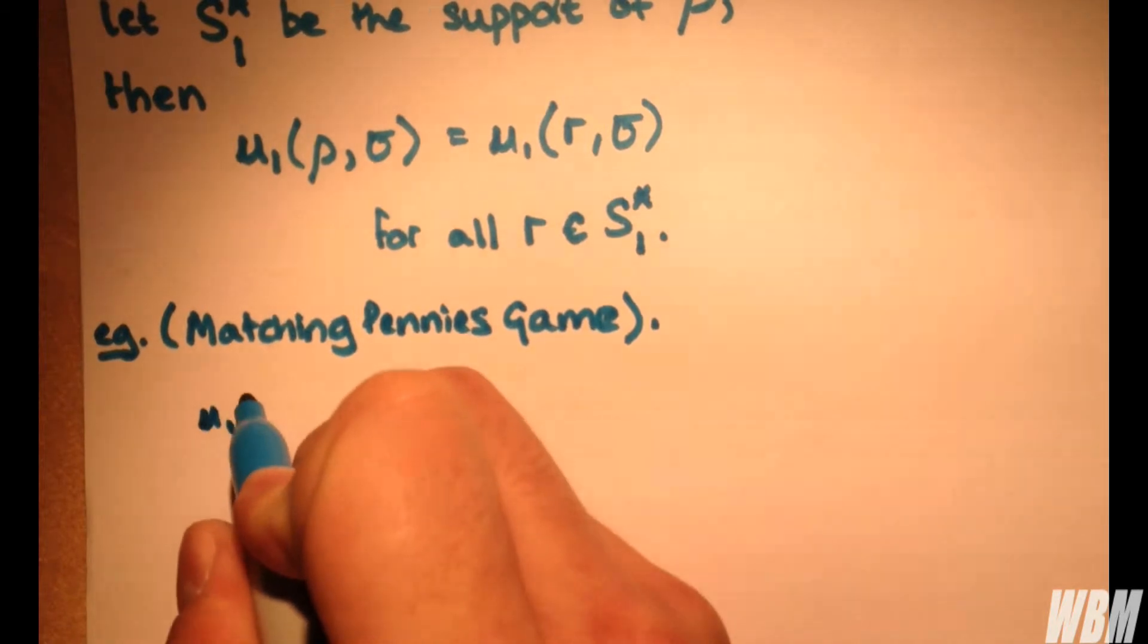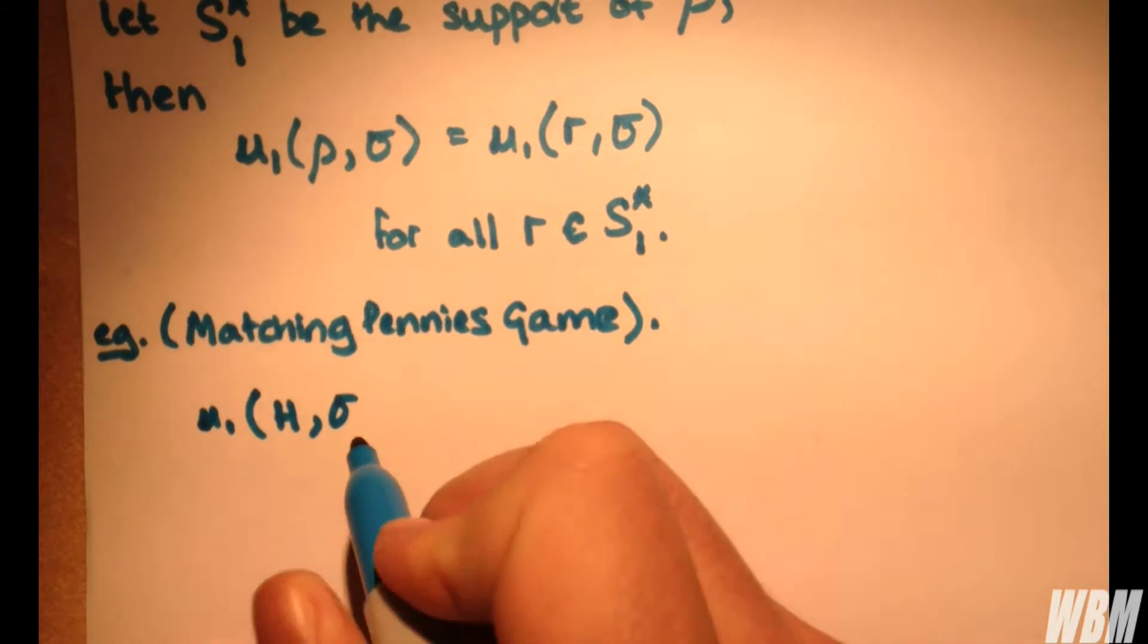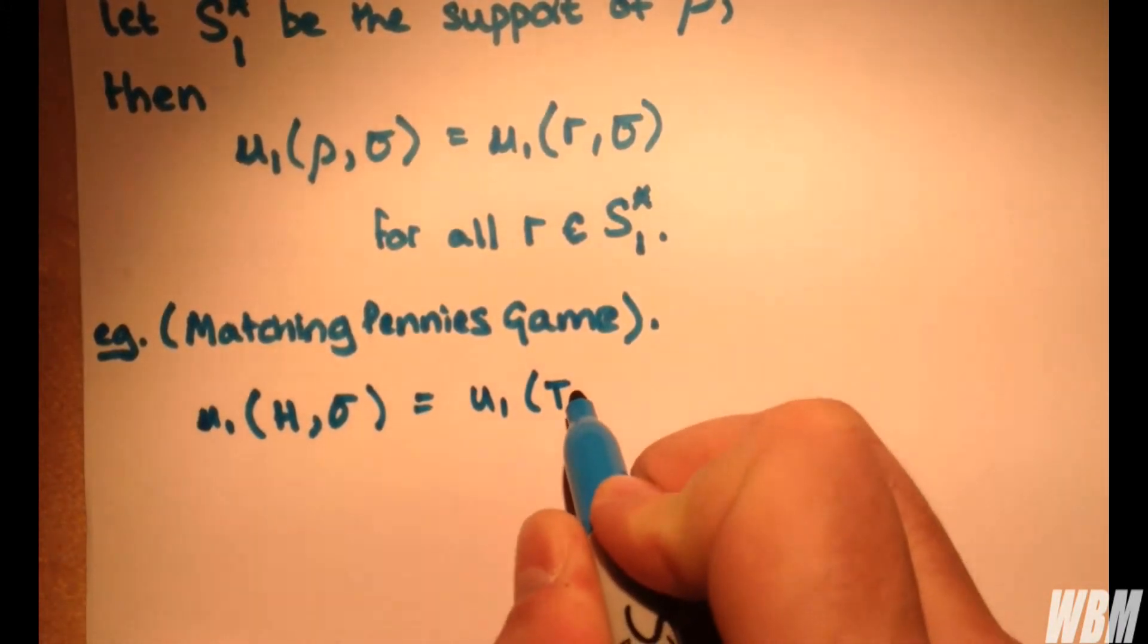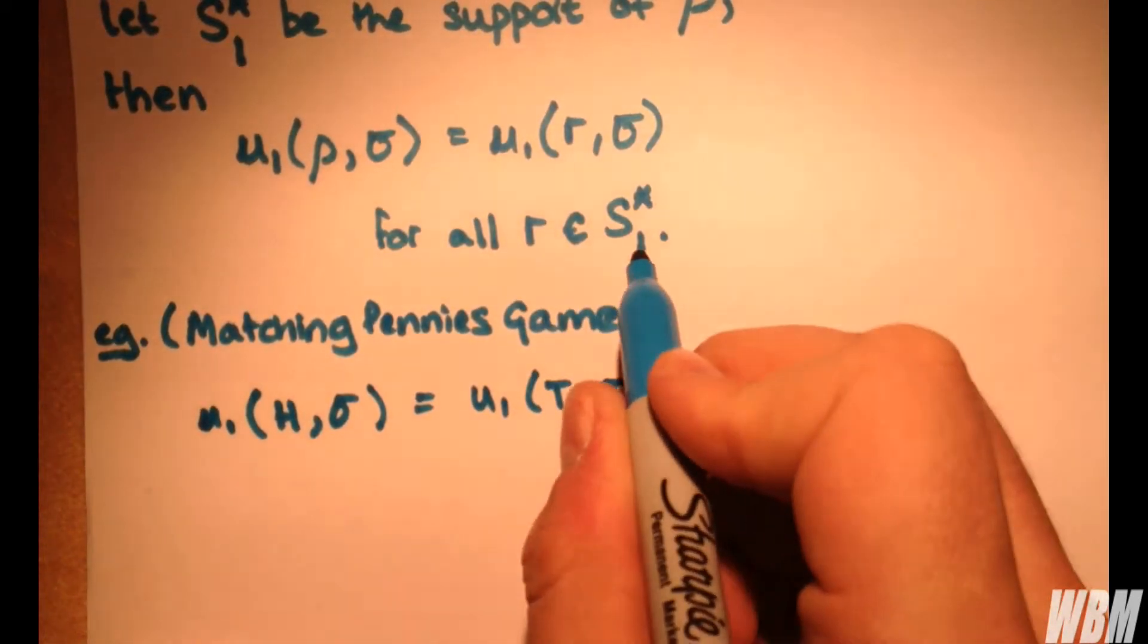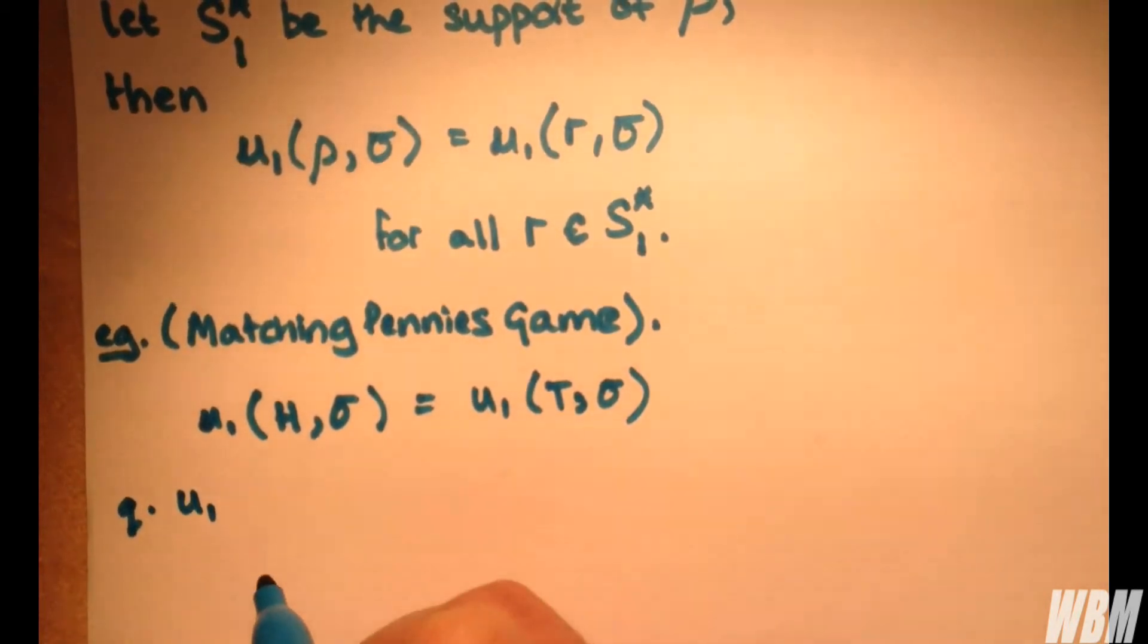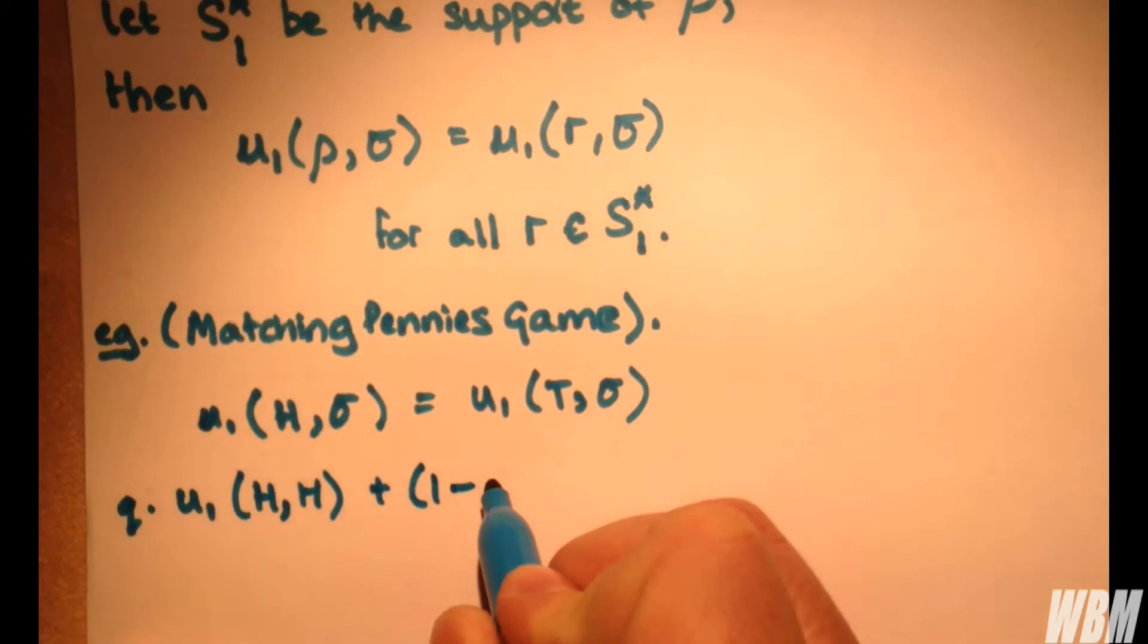So if we have utility for heads equal to the utility for tails, which are both, of course, values of the support set for ρ, then we have q·u₁ where q is, of course, the probability of getting a head in the matching pennies game. As I said, that's in the previous video. So we have q·u₁ for heads plus probability of tails.